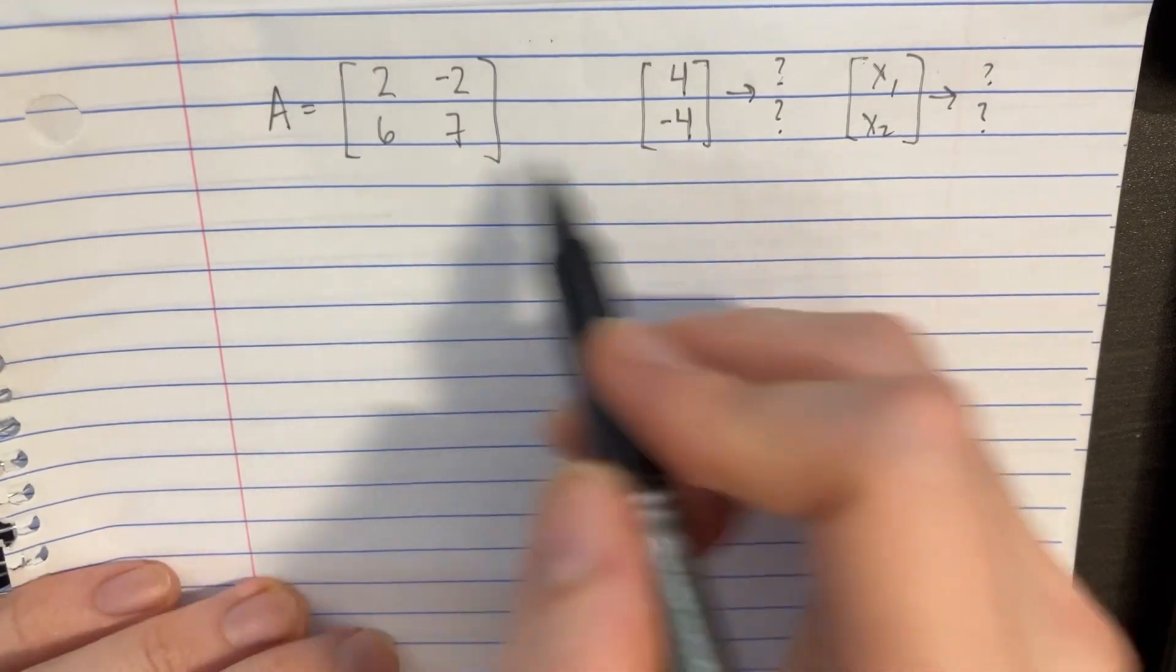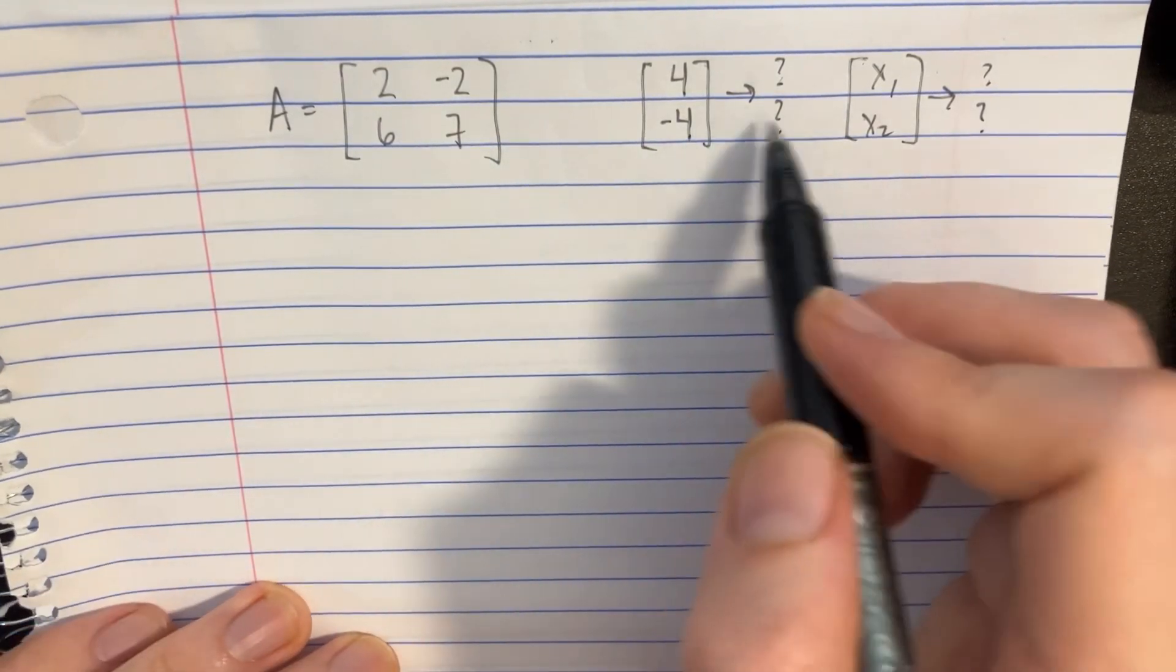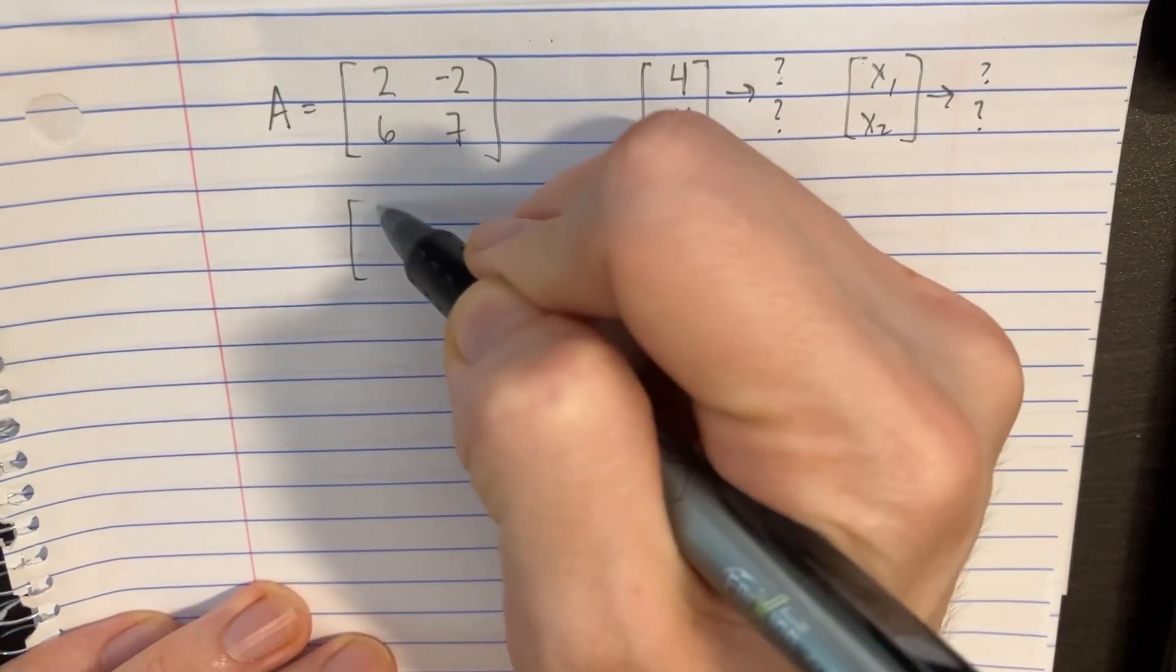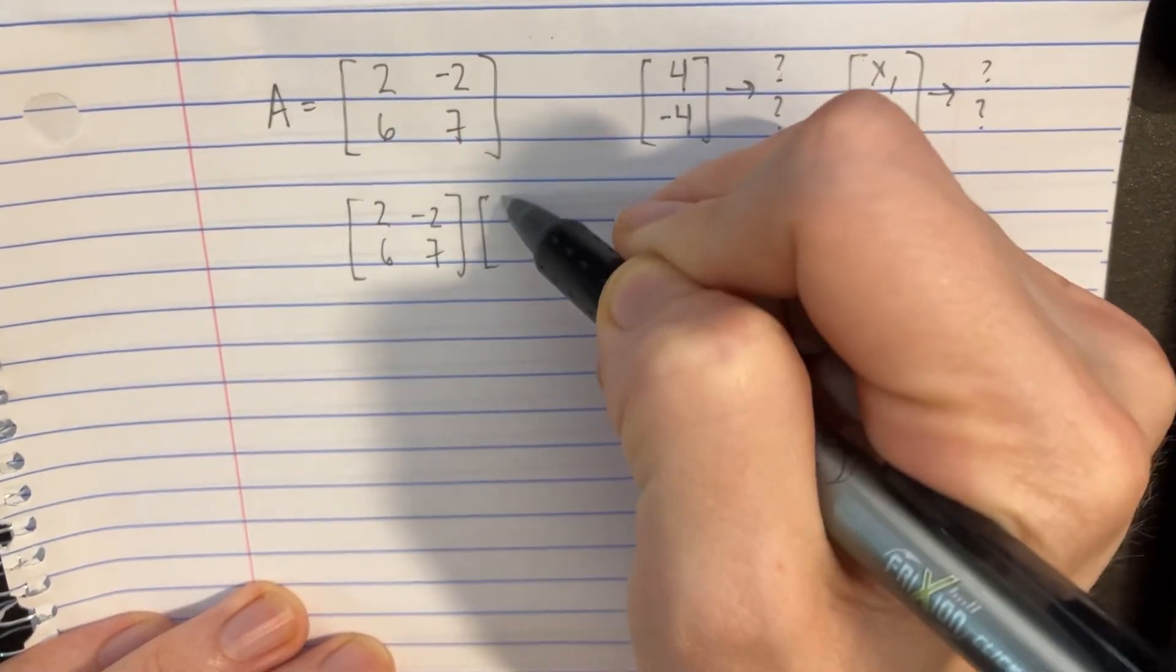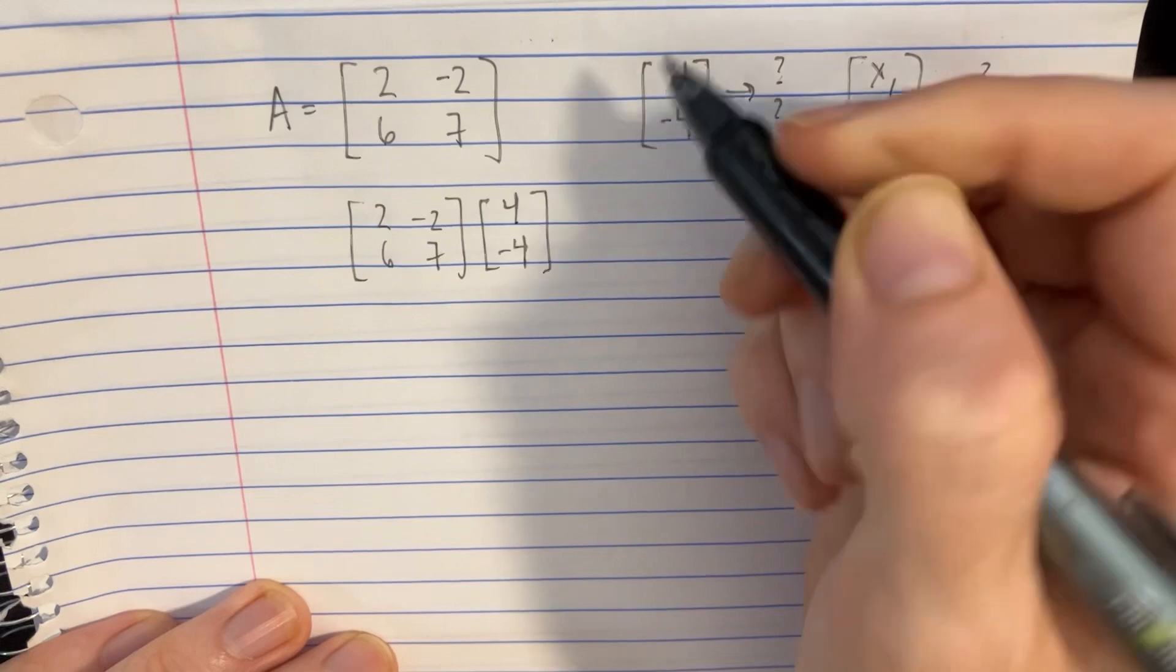Now that we've figured out what the A matrix is, let's try to find the images of these two vectors. So we just take our 2, 6, negative 2, 7, and we're going to multiply that by the 4, negative 4, and see what happens.